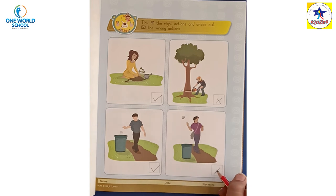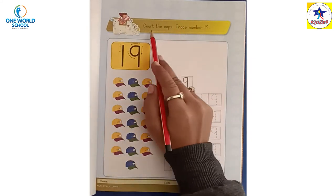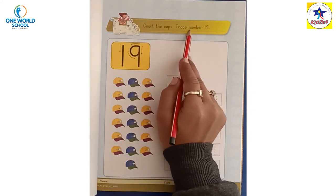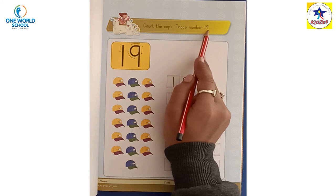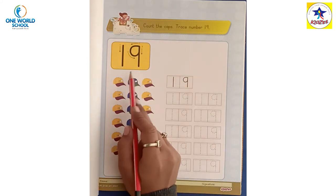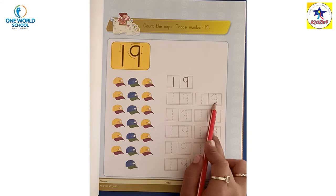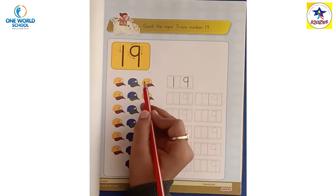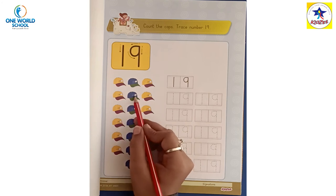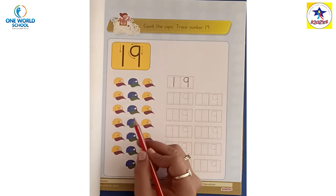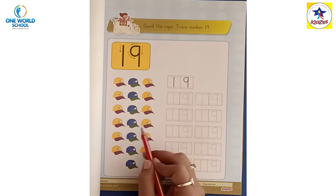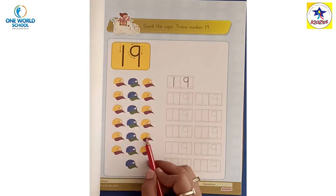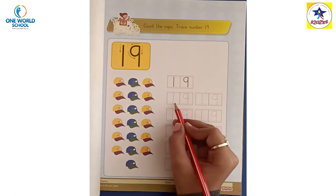Now we have to turn our page. Count the caps. Trace number 19. So we have to count the caps: 1, 2, 3, 4, 5, 6, 7, 8, 9, 10, 11, 12, 13, 14, 15, 16, 17, 18 and 19. How many caps are there? 19 caps.